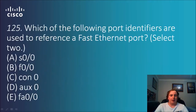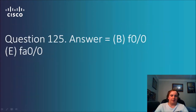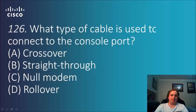Question 125: Which of the following port identifiers are used to reference a fast Ethernet port? Select two. This is basically just knowing the notation. The answers are B and E — simply 'F' for fast Ethernet, and 'FA' as the other notation for that one.